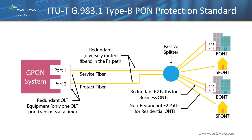Shown here is the Type B protection method, which is the majority of current PON protection schemes and OLT equipment redundancy capability. Both the OLT line cards and the F-1 facilities are protected. Although the OLT line cards are one-for-one redundant, only one of the line cards can transmit to the ONT. The redundant OLT line card and the F-1 facilities protect all the ONUs, residential and business. The business ONTs may have F-2 and ONU port protection as well.